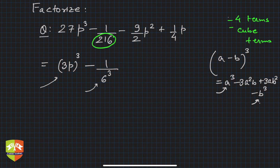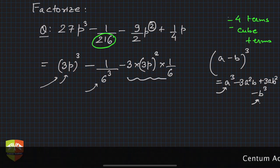So the square term is this one. I have to take out a 3, so can I take out a 3? Yes, I can. Then I have to write this as -3(3p)² × (1/6), and you see guys, this is actually (9/2)p², so it fits into my scheme.